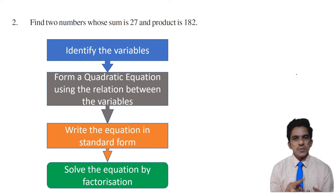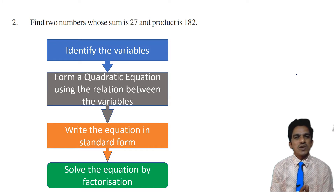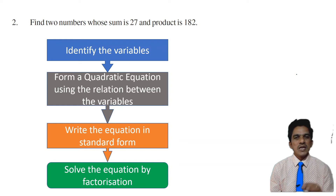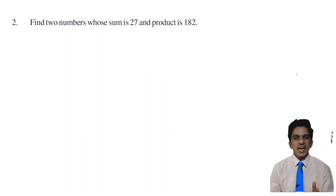So the procedure is: identify variables, form the quadratic equation using the relation between variables, write the quadratic equation in standard form, and then solve by factorization. This is the procedure that we have to follow. Now let us solve this problem.